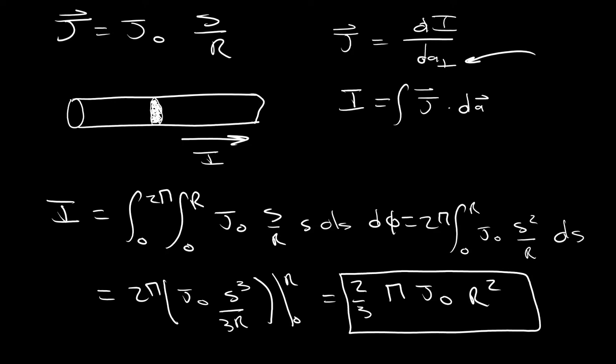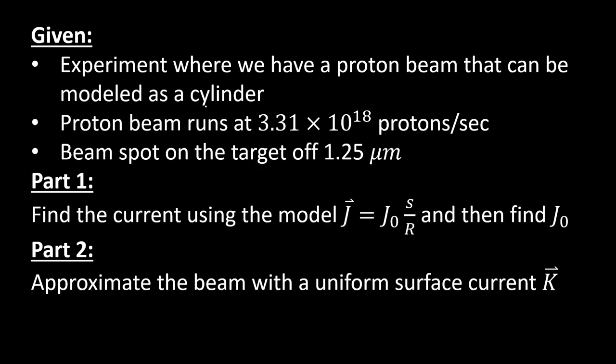But we want to figure out what J₀ is. We want to figure out what that constant is so that we only need to measure one thing, and we can just calculate the other. And so to do that, we can just do some pretty basic algebra, and we can say that our I is equal to 2/3 π J₀ R squared. And we can just solve for this really quickly to get that J₀ is equal to 3I divided by 2π R squared.